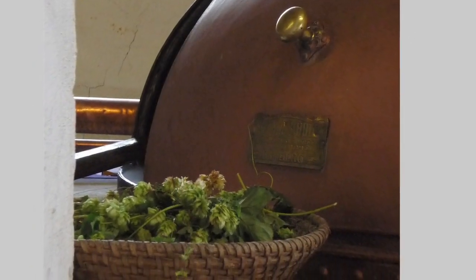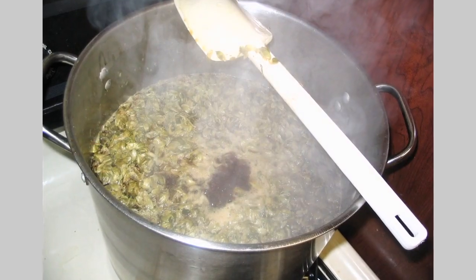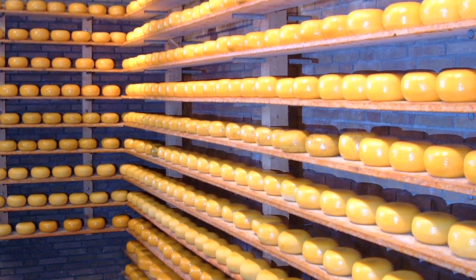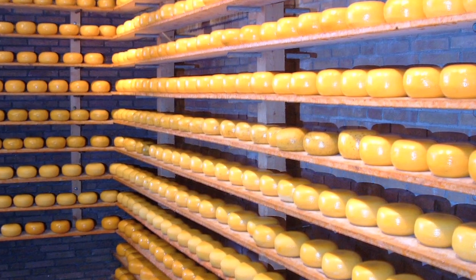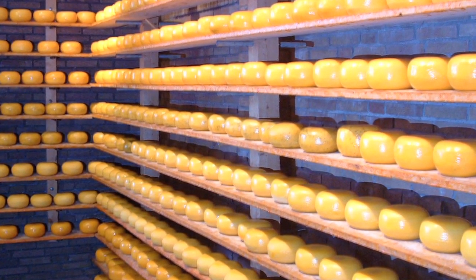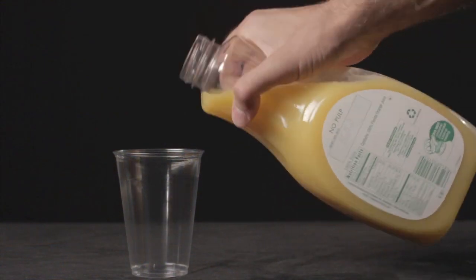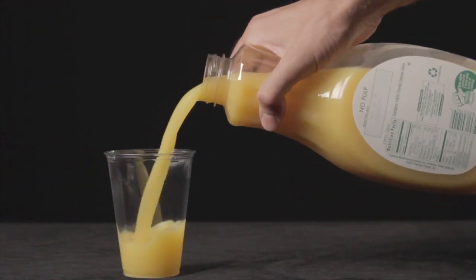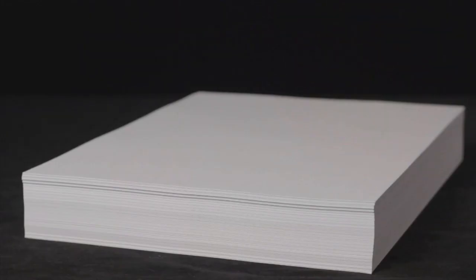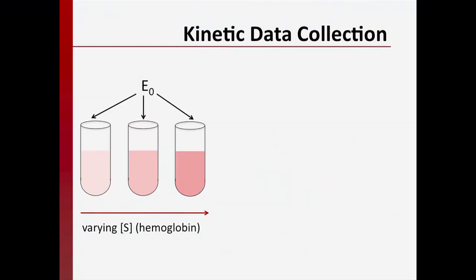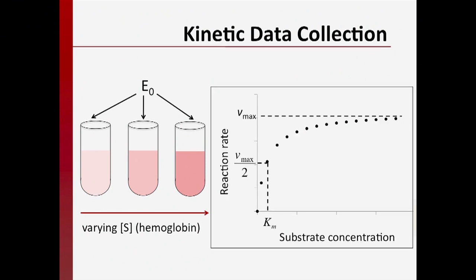In beer and wine production, enzymes in yeast aid the conversion of sugar into ethanol. Enzymes are used in cheesemaking to degrade proteins in milk, changing their solubility and causing those proteins to precipitate. Many industrial processes ranging from fruit juice production to paper production to biofuel production use enzymes. And in this video, you'll see that understanding how enzymes catalyze reactions can help us design better therapeutics.